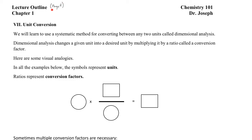I'm here on page 11 of the chapter 1 lecture note outlines and we're going to continue our lessons with today learning about unit conversion. Unit conversion involves taking a measurement that has a specific magnitude and a unit label and transforming it into a different unit. Because we use many different types of measurements in chemistry, unit conversion turns out to be an essential skill.